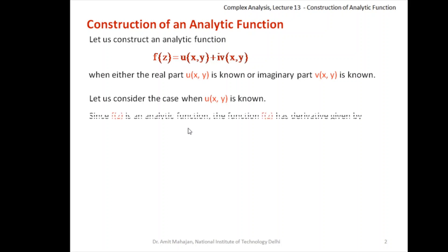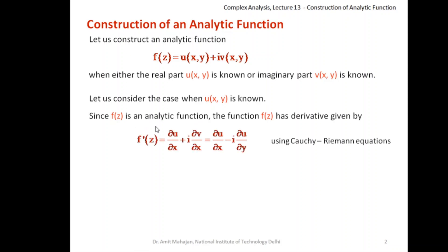Since the function f(z) to be constructed is analytic, it must have a derivative, and the derivative is given by u_x + i·v_x. The Cauchy-Riemann equations are also satisfied because f(z) is analytic. Now, both u and v are required to calculate the derivative. But if you are given only u, then we can utilize the Cauchy-Riemann equation to write v_x in terms of u: specifically, v_x = −u_y. So the derivative can be written in terms of only u, and we can calculate u_x and u_y because u is given.